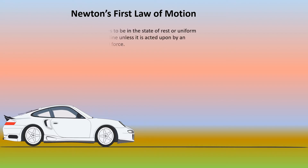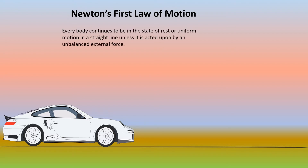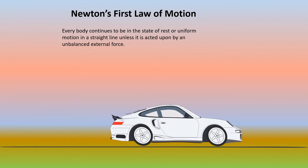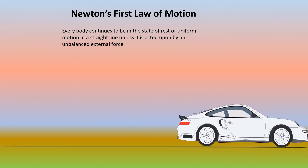Newton's first law of motion states that everybody continues to be in the state of rest or uniform motion in a straight line unless it is acted upon by an unbalanced external force. We have a car over here, and the car moves only when an unbalanced external force is applied on it.